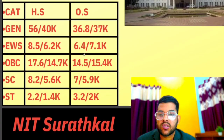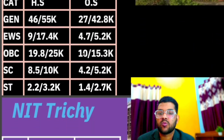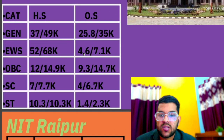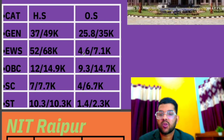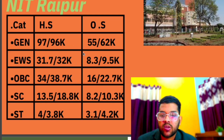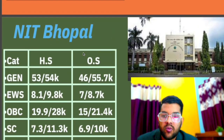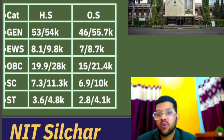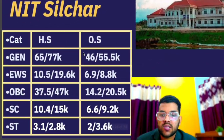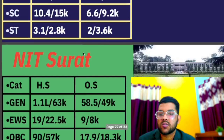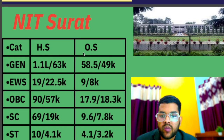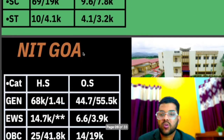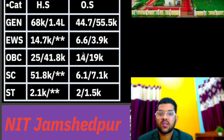For NIT Warangal: general 36,800, EWS 46,400, OBC 14,500, SC 7,000, ST 3,200. For NIT Surathkal: general 27,000, EWS 4,700, OBC 10,000, SC 4,200, ST 1,400. For NIT Trichy: general 25,800, EWS 4,600, OBC 9,300, SC 4,000, ST 1,400 — for general, EWS, OBC, SC, ST. For NIT Raipur: general 55,000, EWS 8,300, OBC 16,000, SC 8,200, ST 3,100 — for other state male. For NIT Bhopal: general 46,000, EWS 7,000, OBC 15,000, SC 6,900, ST 2,800 — for other state male; female data after slash, homestate data sideways. For NIT Silchar: general 46,000, EWS 6,900, OBC 14,200, SC 6,600, ST 2,000 — for other state male.